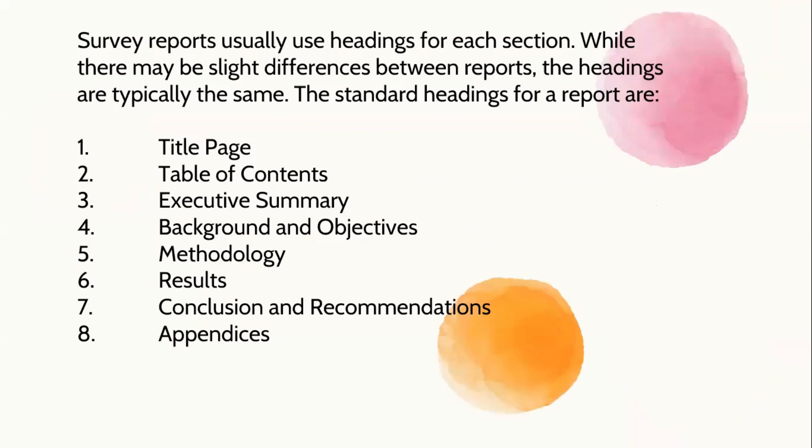While there may be slight differences between reports, the headings are typically the same. The standard headings for a survey report are: title page, table of contents, executive summary, background and objectives, methodology, results, conclusion and recommendations, and appendices. As you can see, the contents and sections are still the same as with lab reports and field reports. They only differ in the contents you provide in each section, since there are different types of reports.